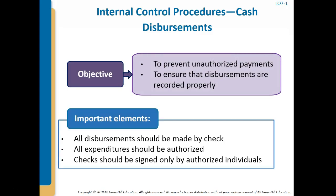Proper controls for cash disbursements should prevent unauthorized payments and ensure disbursements are recorded in the proper accounts. Important elements include: all disbursements other than very small petty cash amounts should be made by check, providing a permanent record. All expenditures should be authorized before a check is prepared — for example, a vendor invoice should be compared with the purchase order and receiving report to verify accuracy of quantity, price, and part numbers. This process should include verification of the proper ledger accounts to be debited.